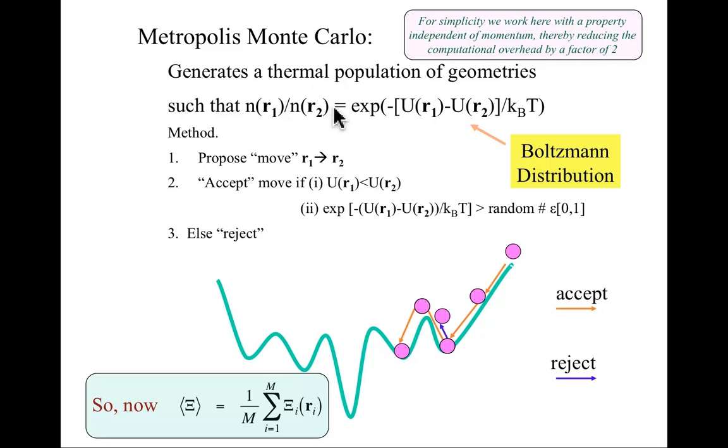Here's basically what it does. Just for simplicity, I'm going to take a property that doesn't depend on momentum. As a result, I'm only going to work in coordinate space, not in momentum space. There certainly are many properties that don't depend on momentum. Say the molecular dipole moment does not in fact depend on momentum. It's only a coordinate dependent phenomenon. What one does is you generate a population of geometries. We're only in coordinate space, so it's just geometries. Such that the number of representative structures for a given geometry follows the appropriate Boltzmann weighting. So the number at geometry R1 divided by the number at geometry R2 will be dictated by the difference in energies for R1 and R2 divided by kT and the exponential of that.